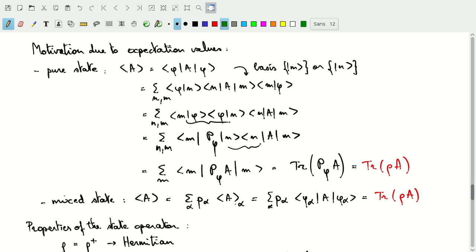And if I then go through the same derivation, and actually it happens fairly quickly, the only thing I need to do is write my expectation value here using the states phi alpha. And then I immediately find that I, again, have this trace of rho times A after absorbing the sum over the probabilities back into rho.